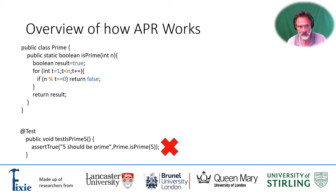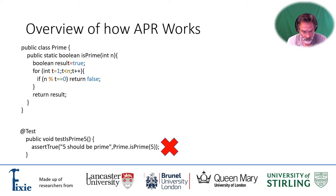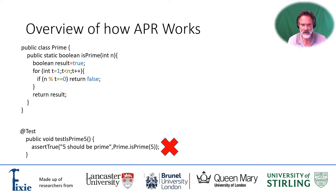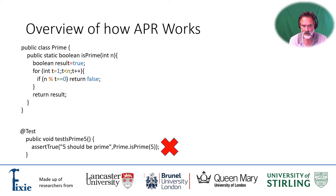Unfortunately when we run it, it fails. So there's something wrong with that piece of code, and what we've done is highlight the places that the piece of code could actually be wrong. It could have an equality that's incorrect — maybe it should have been true or false or something along those lines.